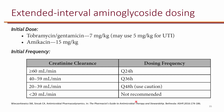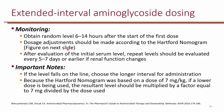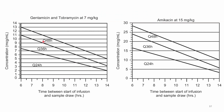For a creatinine clearance less than 20, this nomogram is not recommended. Monitoring is done using a random level rather than a peak and trough. You obtain a random level between 6 and 14 hours after the start of the first dose, then adjust the dosing frequency based on that level. Here is the nomogram — the one on the left is for gentamicin and tobramycin, and the one on the right is for amikacin.